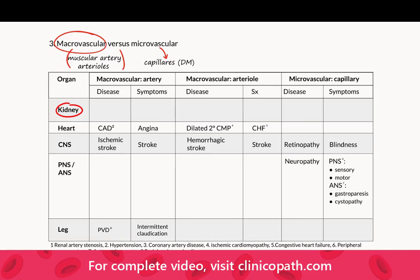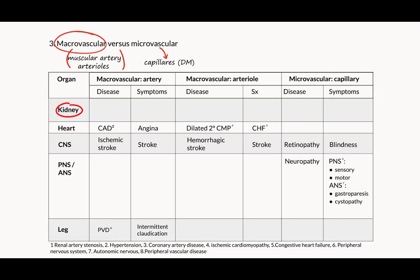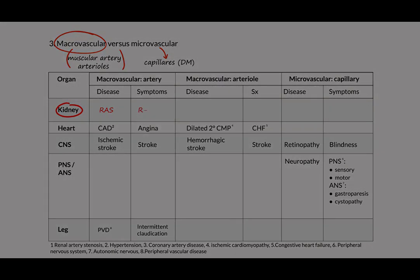We're not going to cover heart, CNS, legs, and so on here, but obviously we'll visit them when we come to those organ systems and when we do the circulatory system. When we talk specifically about the kidney, macrovascular arterial disease of the kidney is renal artery stenosis, and the symptom is going to be resistant hypertension.